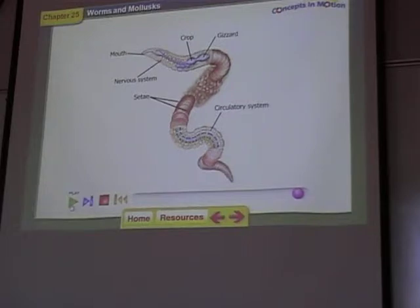To move, an earthworm first contracts its longitudinal muscles on several segments, which bunch together, causing tiny setae to protrude and anchor the worm in the soil. Then the earthworm's circular muscles contract, the setae are withdrawn, and the worm moves forward.